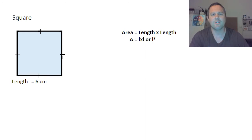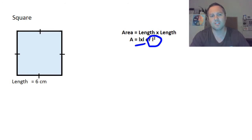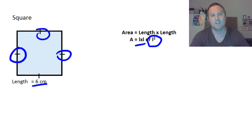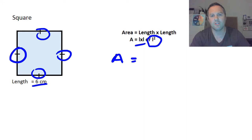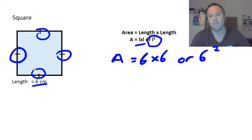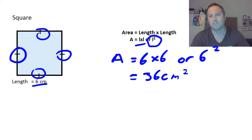We've also got a square — very similar to the rectangle, but in this case we've got length × length × length × length, which means area equals L squared, or L times L. Our L is 6, and each side is the same size. So area equals 6 times 6, or 6 squared, which is 36 centimeters squared.